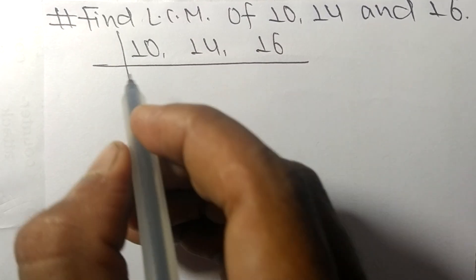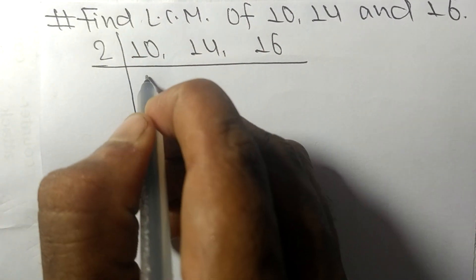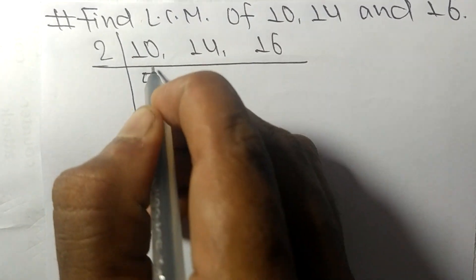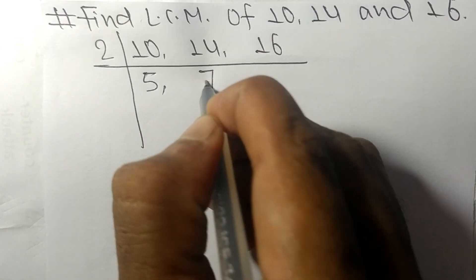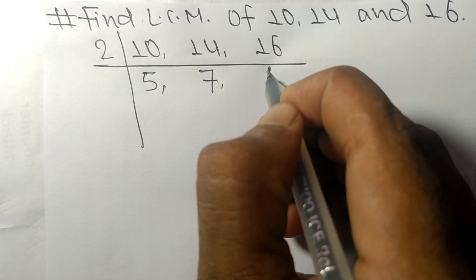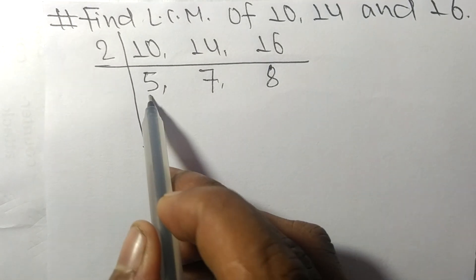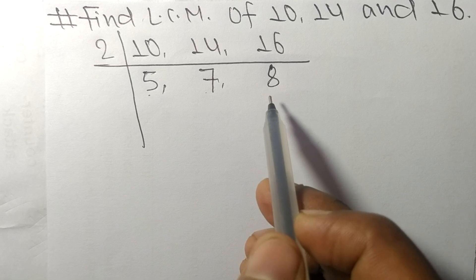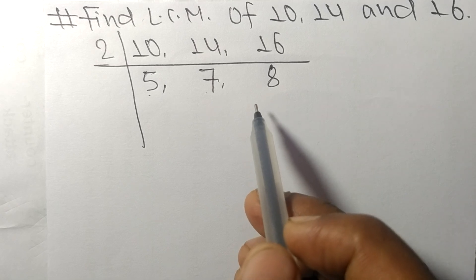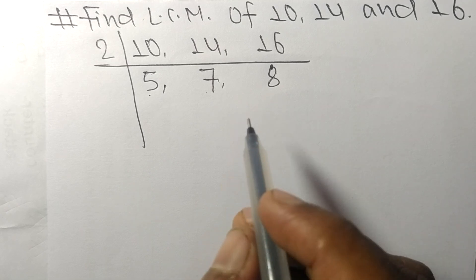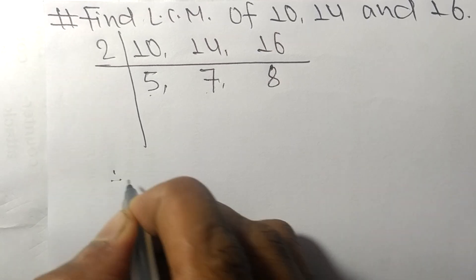All these numbers are divisible by 2: 2 times 5 equals 10, 2 times 7 equals 14, 2 times 8 equals 16. Now we got 5, 7, and 8 which are not exactly divisible by the same number.